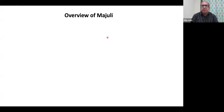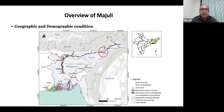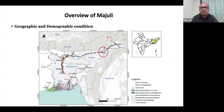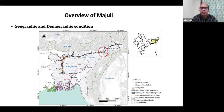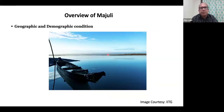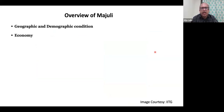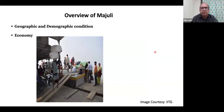Moving on to our next field site, Majuli. Majuli is a large island in the Brahmaputra River in Assam — one of the economically poorer areas, with tribal communities and other marginalized communities. Local economies revolve around agriculture, allied activities, and primarily fishing. Marginal communities do commercial fishing and most households are involved in subsistence fishing.